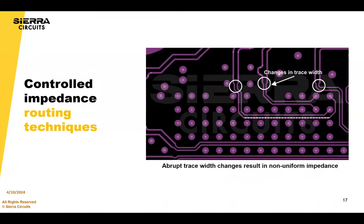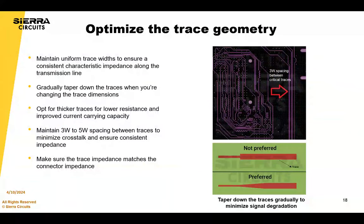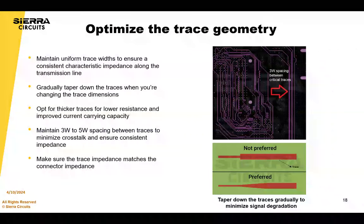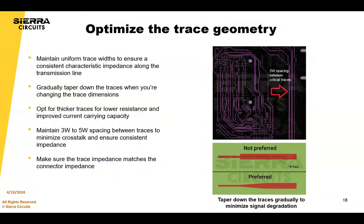For controlled impedance routing techniques, you want to maintain a uniform trace width along the transmission line to achieve consistent characteristic impedance. When changing your trace dimensions, taper down the traces gradually to minimize reflections, degradation, and impedance mismatches. Opt for thicker traces for lower resistance, which also improves trace current carrying capacity. Maintain 3W to 5W spacing between traces to minimize crosstalk and ensure uniform impedance.